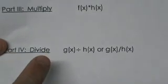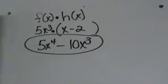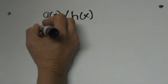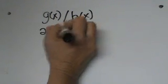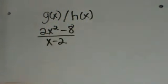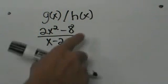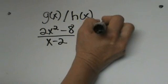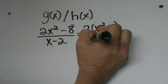Now let's look at dividing. We are going to take the g of x function and divide it by the h of x function. It can be written as a division sign or just as a fraction. So let's write down our g of x function divided by our h of x function: 2x squared minus 8 all divided by x minus 2. To simplify that, we are going to do some factoring. In the numerator we can factor out a 2, because there is a common factor of 2, leaving us with x squared minus 4 over x minus 2.